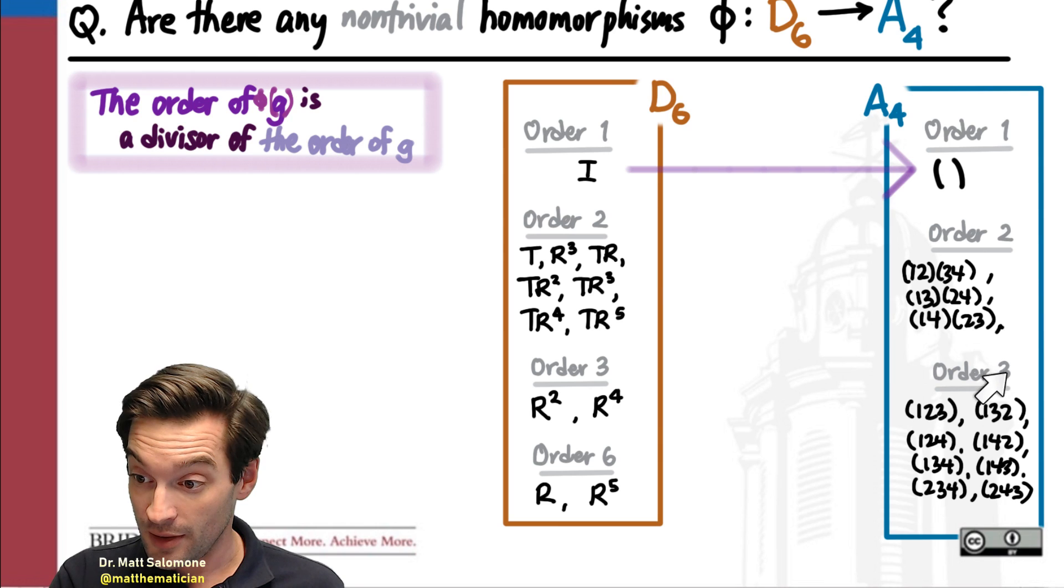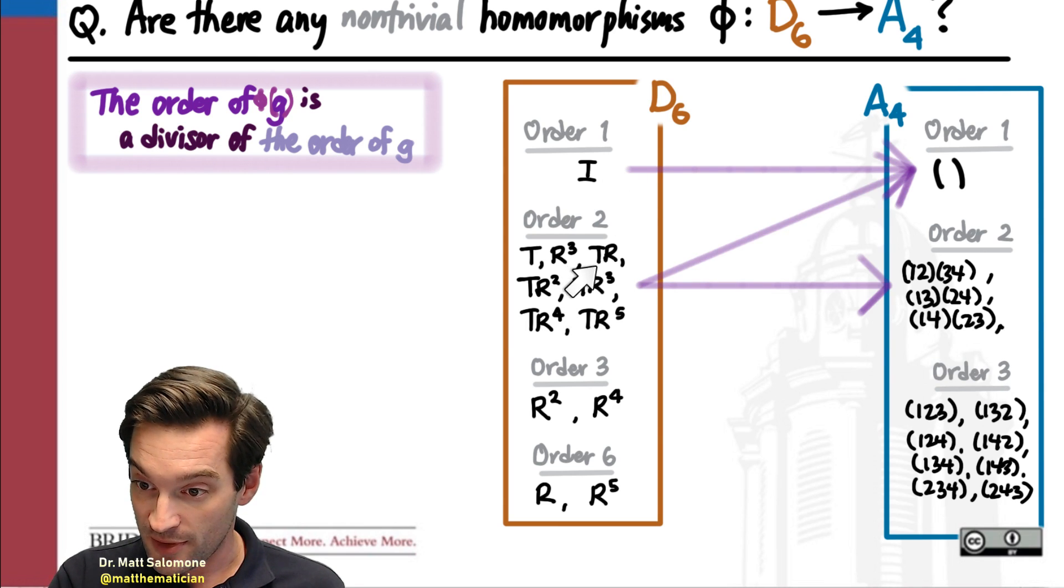Because 3 is not a divisor of 2. So I know that all of these elements have got to be sent either to the identity or to one of these 3 order 2 elements.